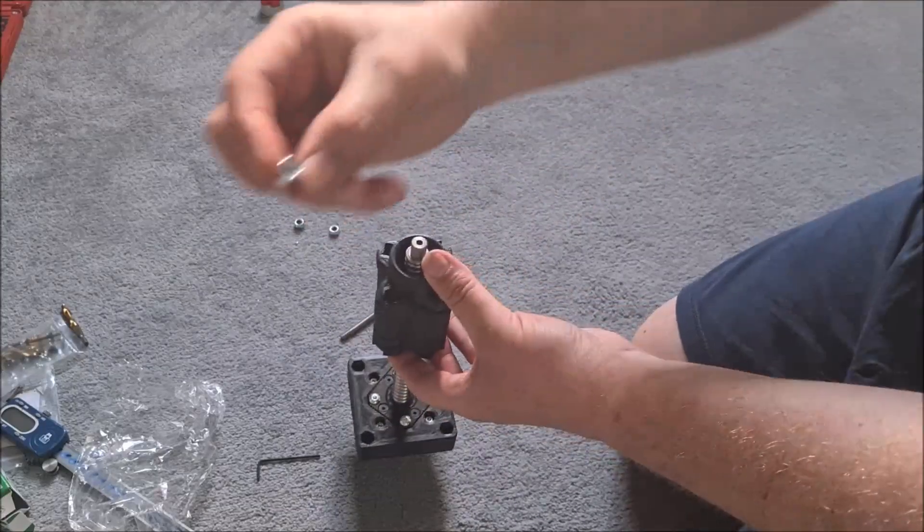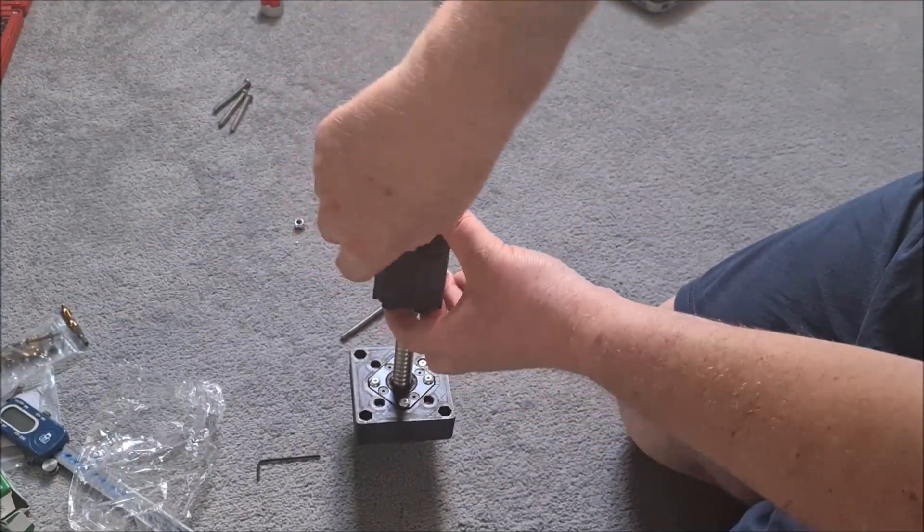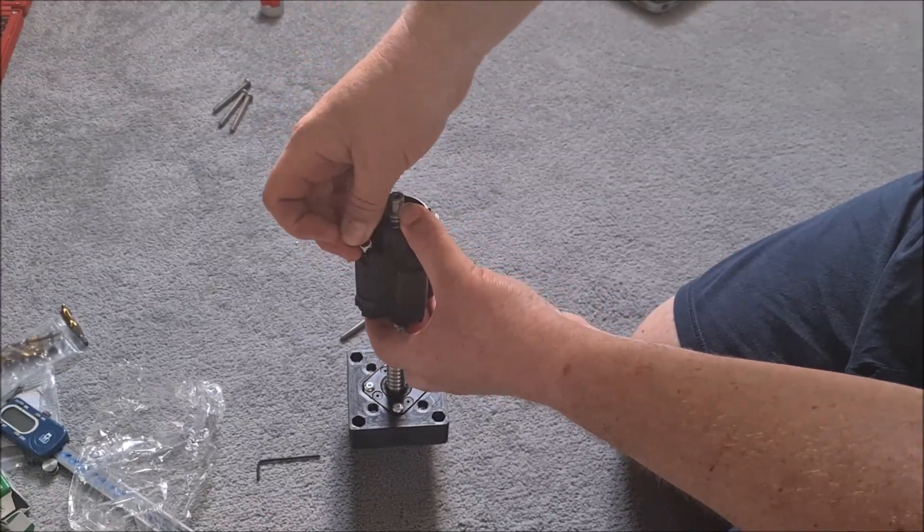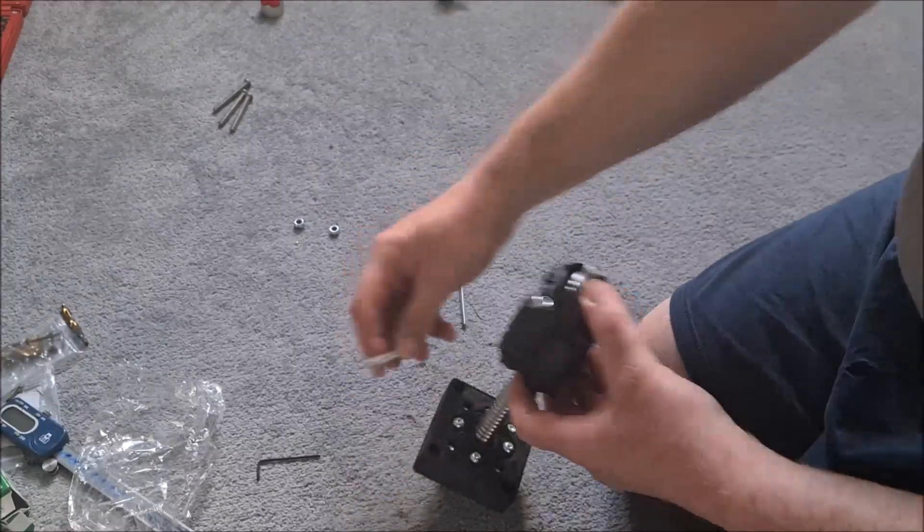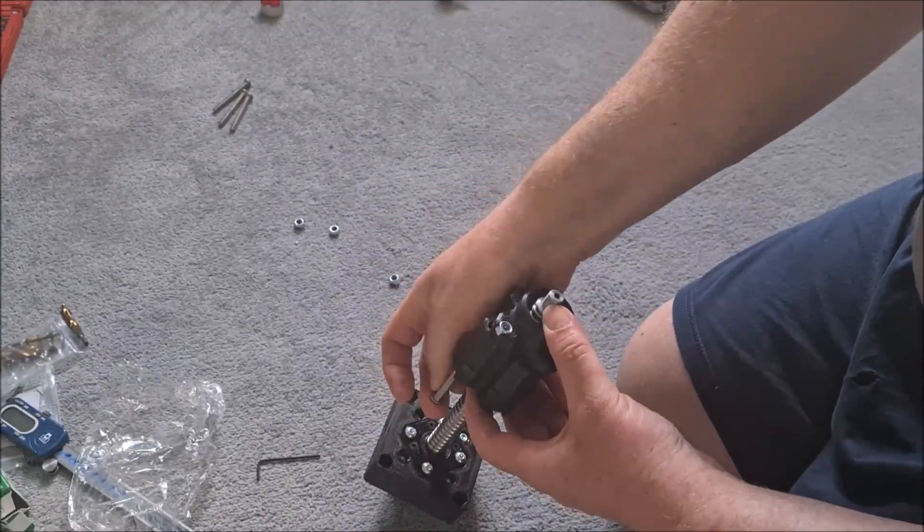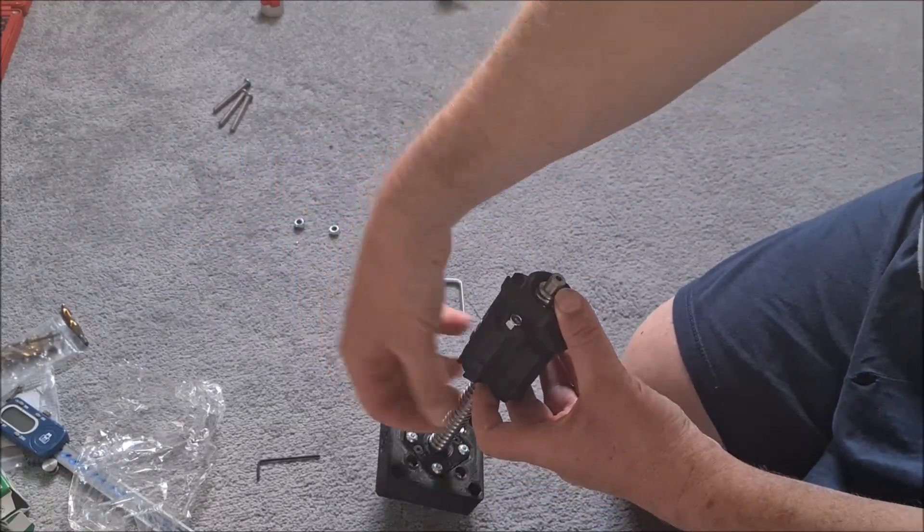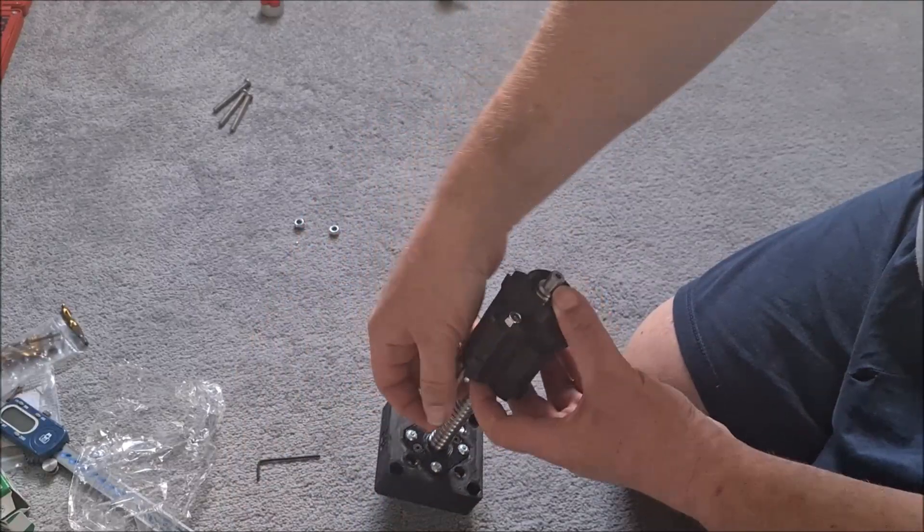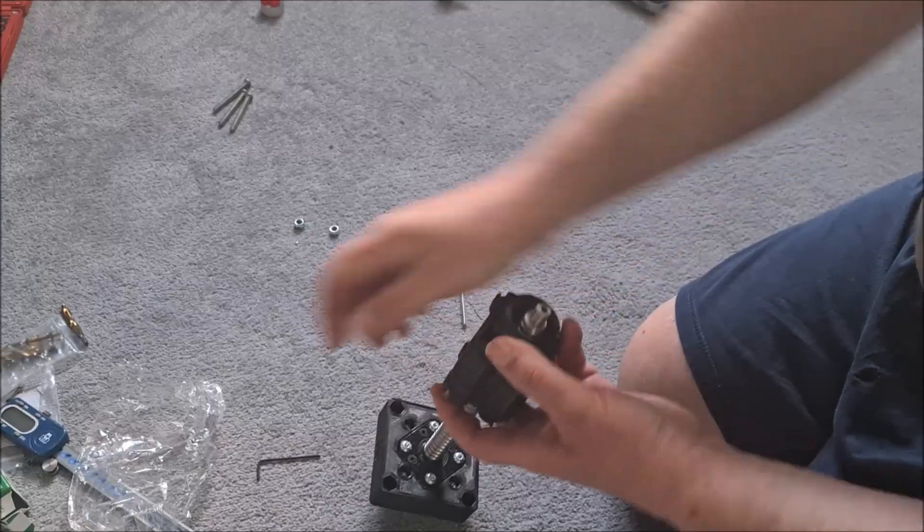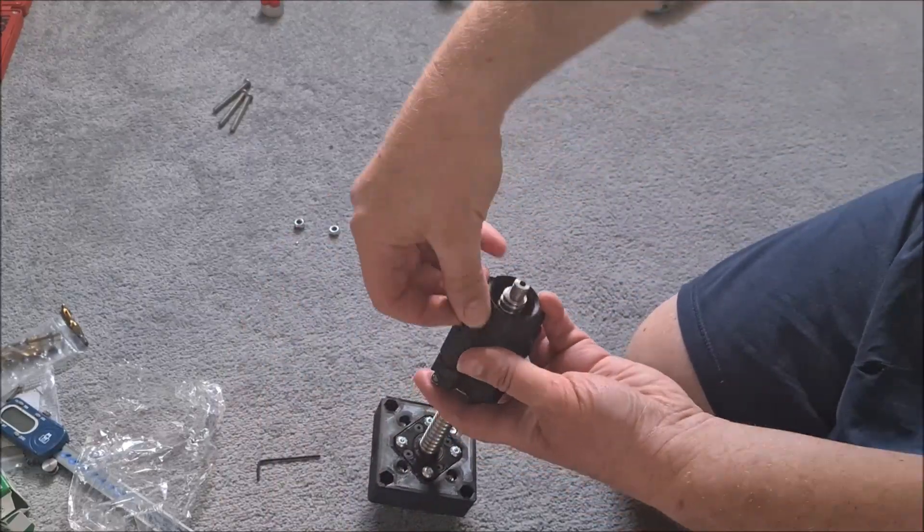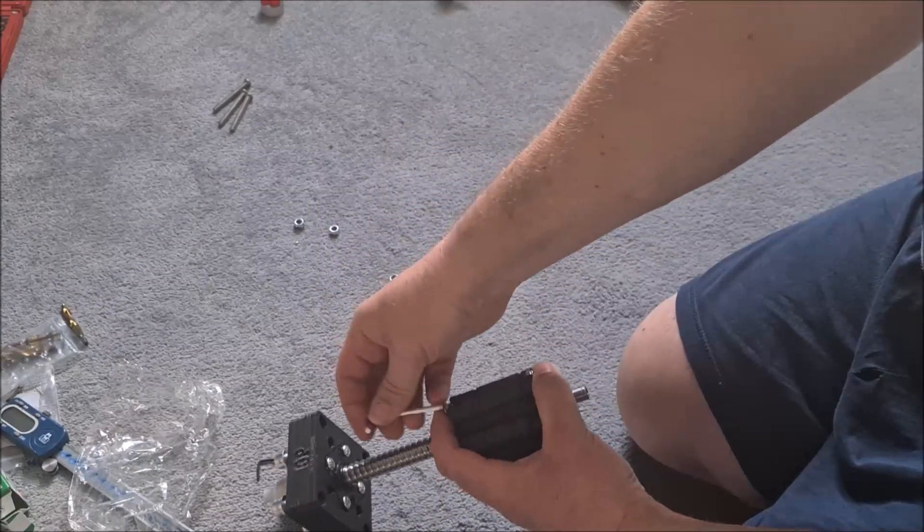And then we've got captive M6 nuts that go into the little hexagon sockets in the bottom cap. And then the M6 by 60 bolts go through the whole lot. They're pretty tight actually in these at the minute. And into the nylock M6s like so.